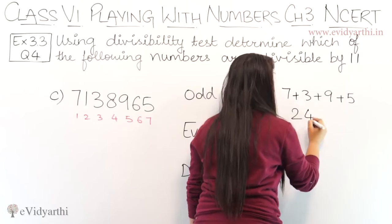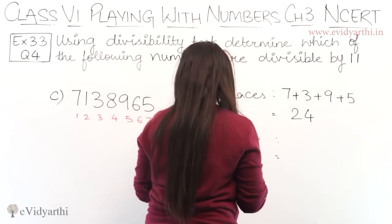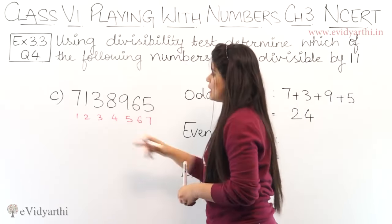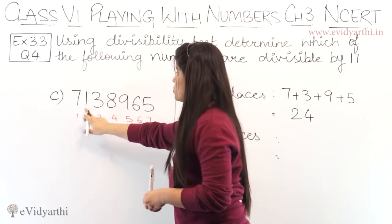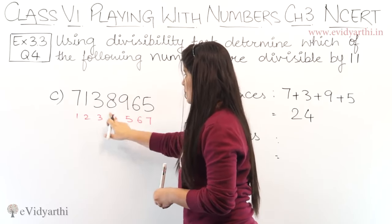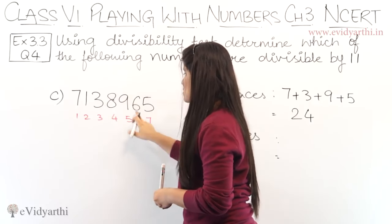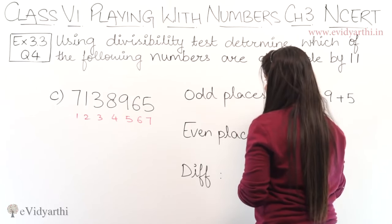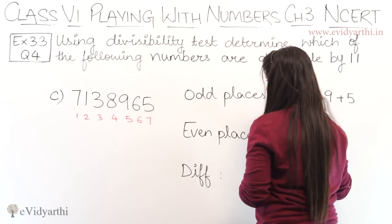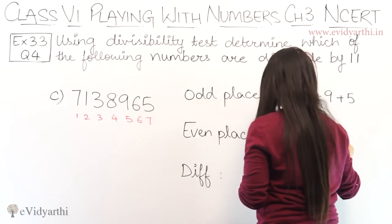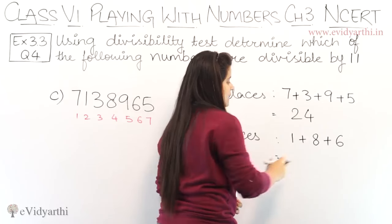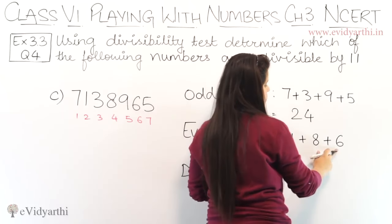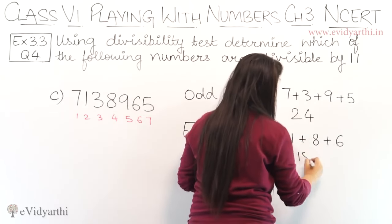Now we add the even place digits. Even places are positions 2, 4, and 6 — which are 1, 8, and 6. So, 8 plus 1 is 9, and 9 plus 6 is 15. The sum of even place digits is 15.